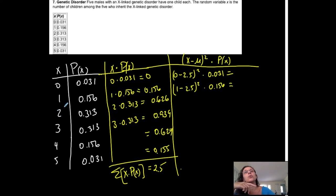Next X, 2, minus my mean, square it, times my probability, 0.313. I'm going to do one more, and then, 3, this X, minus my mean, 2.5, square it, times the probability for that one.